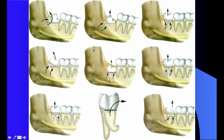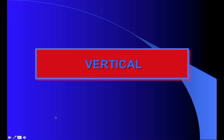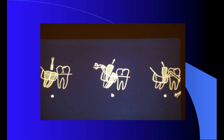You can cut the crown of the lower third molar in different ways depending on its position and on the number and shape of the roots, as you can see in this slide. I will now go through the different positions of the lower molar and the different tooth divisions we perform in each case.